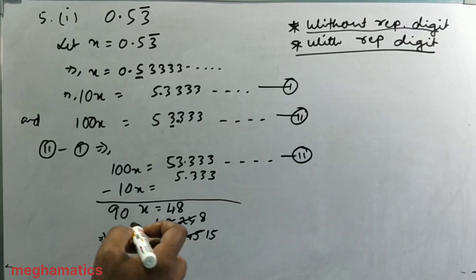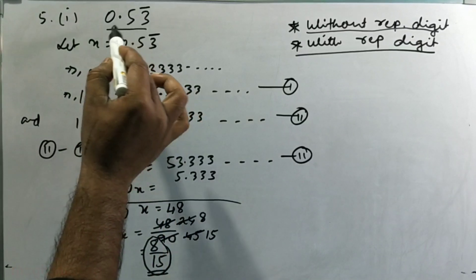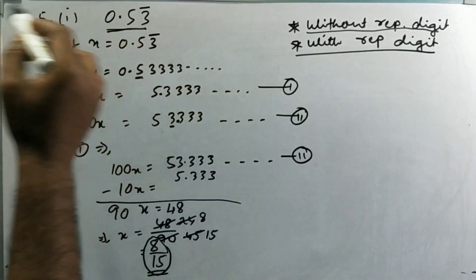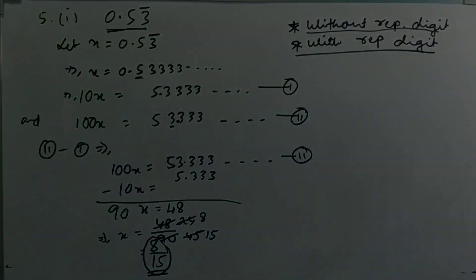So the fraction equal to the decimal 0.53 bar is 8 by 15.